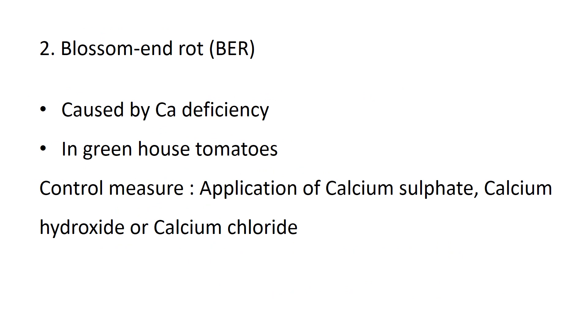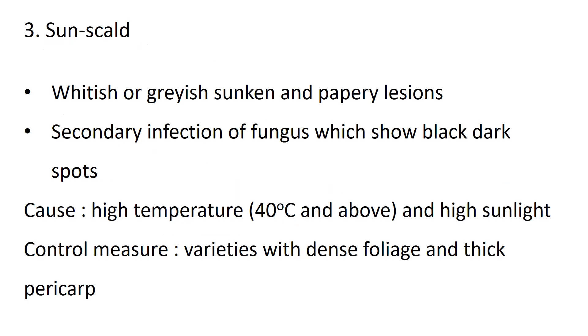Next is blossom end rot, caused by calcium deficiency. It is mainly observed in greenhouse tomatoes. Control measures include application of calcium sulphate, calcium hydroxide, or calcium chloride.